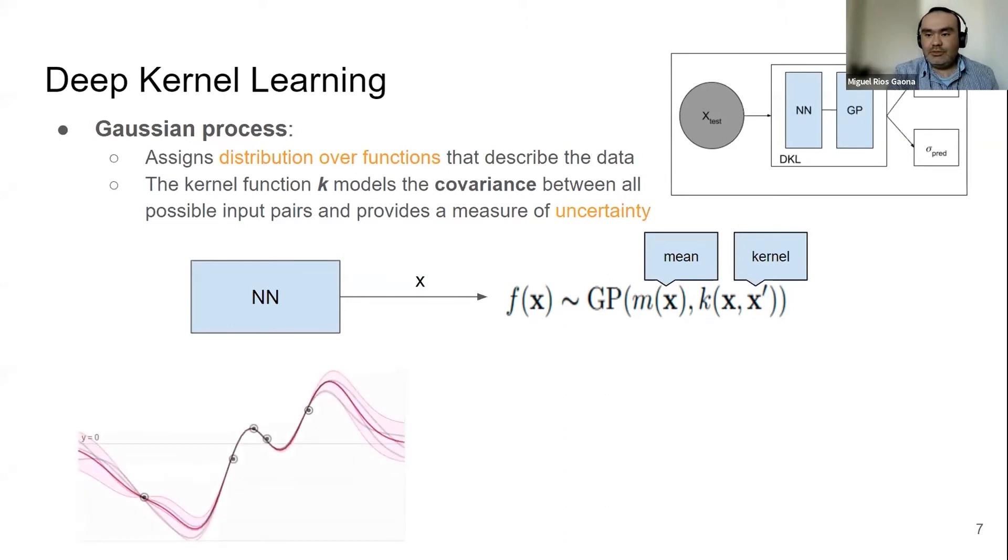Another thing with the Gaussian process is that it can change model capacity given the observed data. So where we have more observed points, we are going to have lower uncertainty. When we have less observed points or we are far from the observed points, we are going to have higher uncertainty.